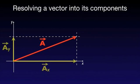The two vectors AX and AY, shown on the screen, are called the components of vector A along OX and OY. The process of finding out the components of a vector is called resolving a vector into its components.